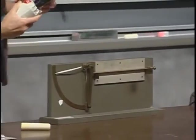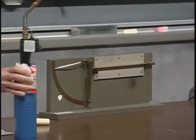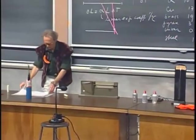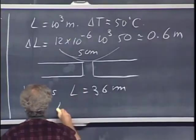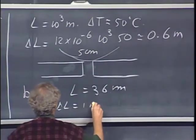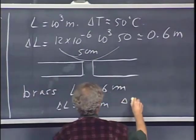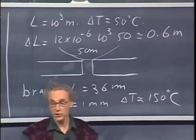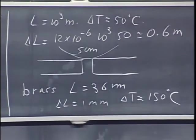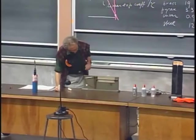There it goes. Doesn't take very much. So we have brass, and L is 36 centimeters. Delta L would be about one millimeter for a temperature increase of only 150 degrees centigrade, which, of course, is trivial for us with that blowtorch.